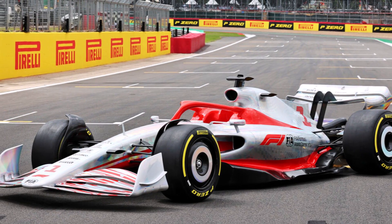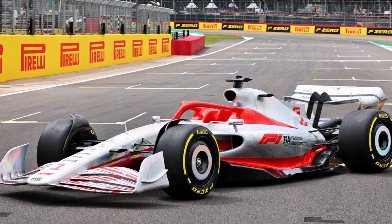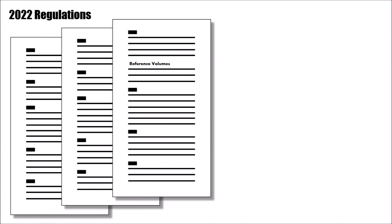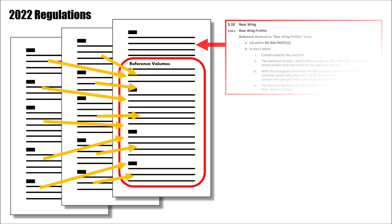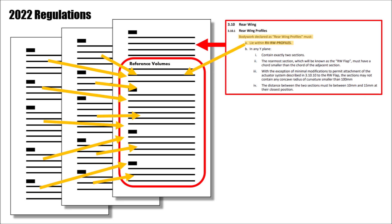The 2022 F1 regulations are different. Now the regulations define reference surfaces and reference volumes at the back, and all rules about particular parts then always refer back to these reference volumes. They then for example say: rear wing profiles must lie within reference volume rear wing profiles.